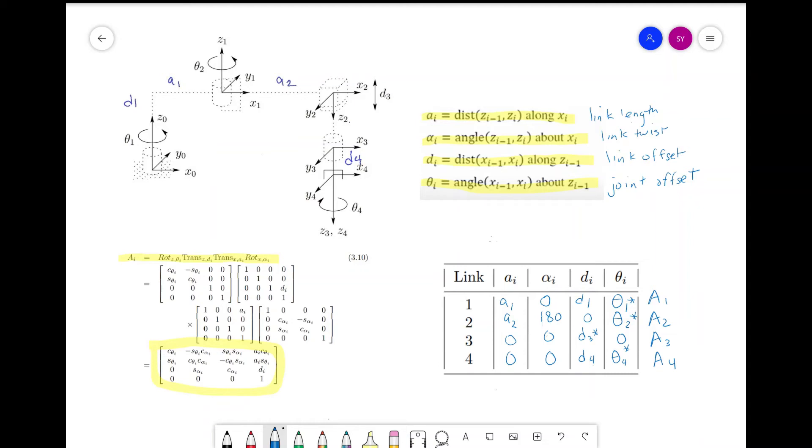Finally, we can find T, our transformation matrix, by post-multiplying all the homogeneous transformations together. So T equals A_1 times A_2 times A_3 times A_4. Now the result of T tells us where the fourth frame is in reference to our base frame. And that's it. Thank you.